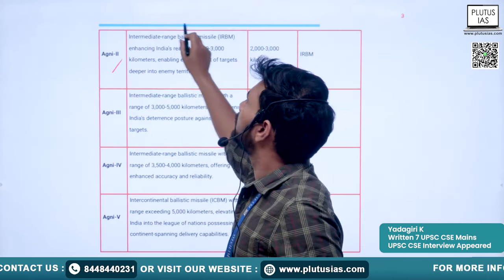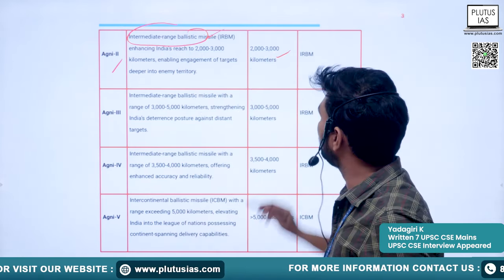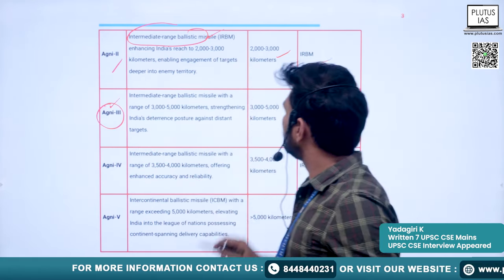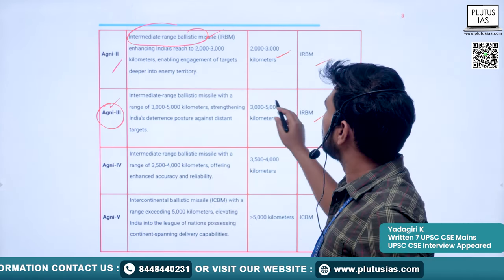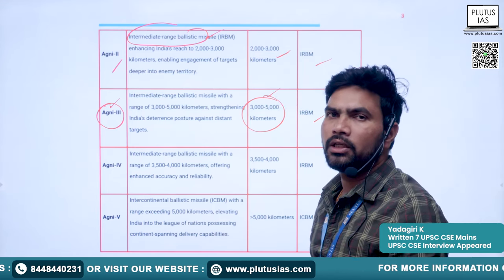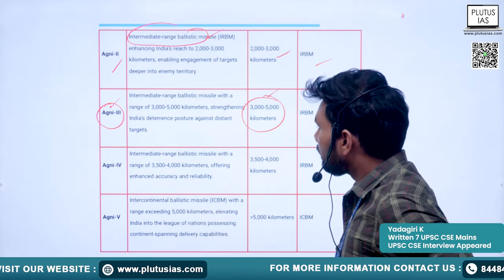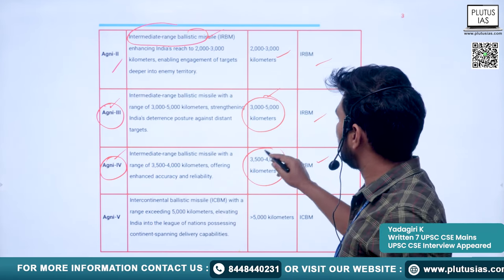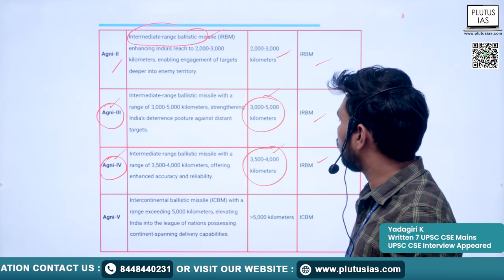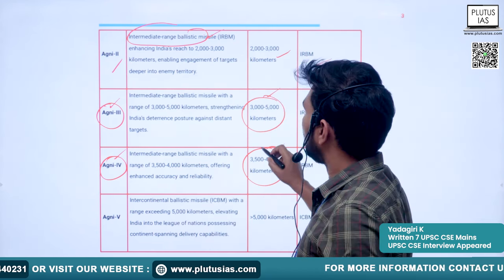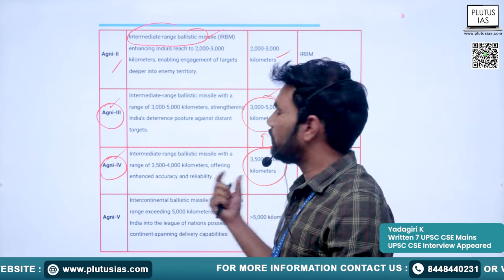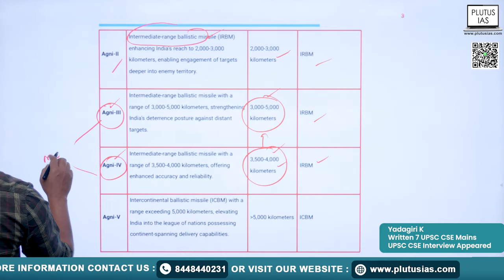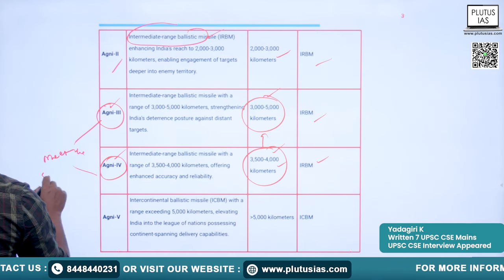Agni-2 is an intermediate-range ballistic missile (IRBM) with a range of 2000 to 3000 kilometers. Agni-3 is also an IRBM with a range of 3000 to 5000 kilometers. Agni-4 is an IRBM with a range of 3500 to 4000 kilometers — the range of Agni-3 is comparatively higher than Agni-4, adjusted to meet specific operational requirements.